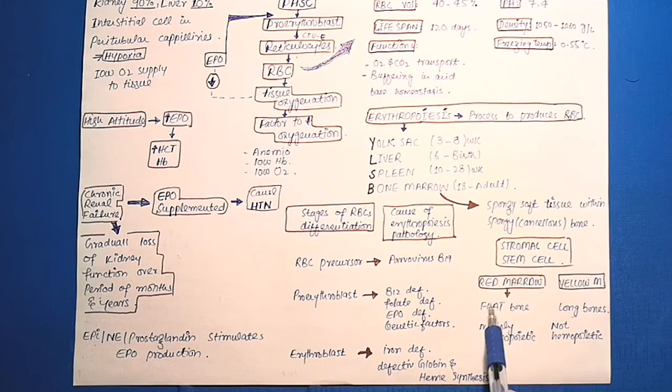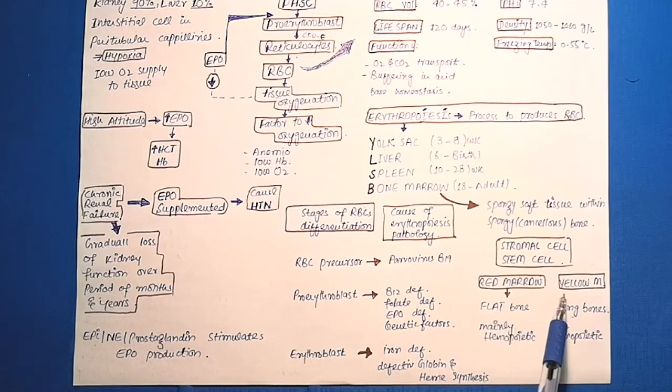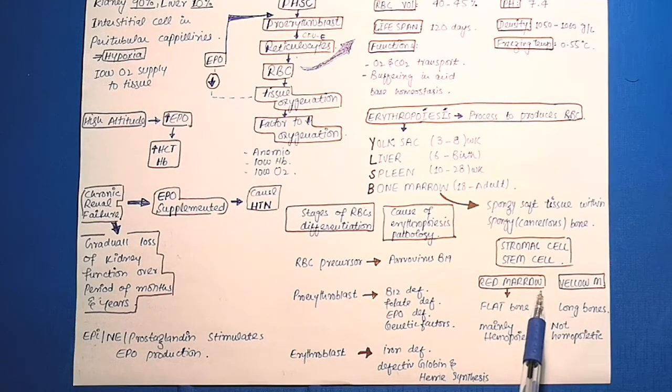The flat bones, like sternum, pelvic bone, vertebra, skull, and scapula, they are mainly hematopoietic. But the long bones like tibia, femur, and humerus, they are not hematopoietic. So the bone marrow of all the bones make red blood cells except long bones because they are quite fatty.